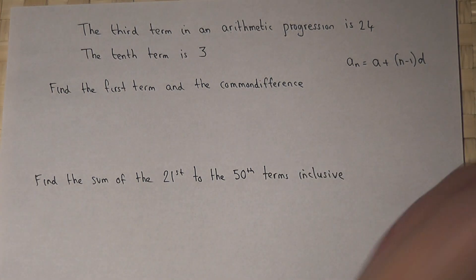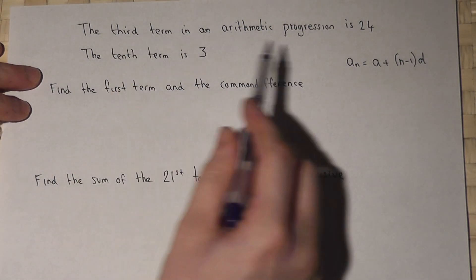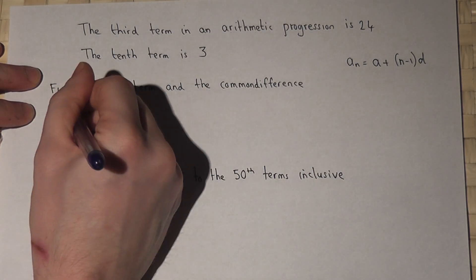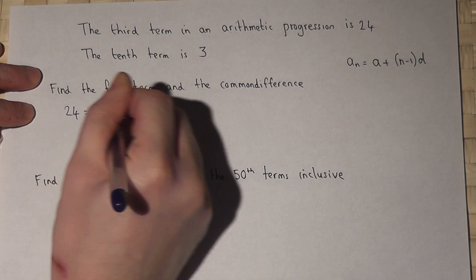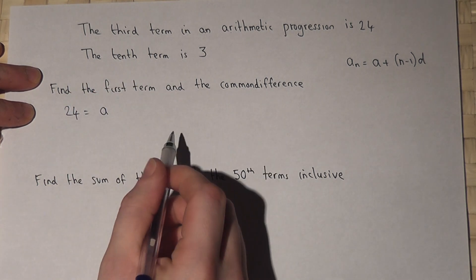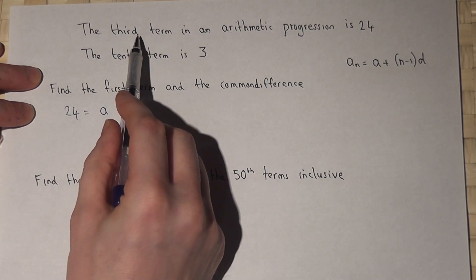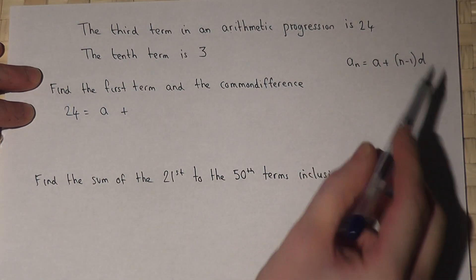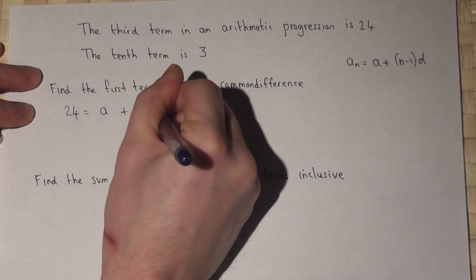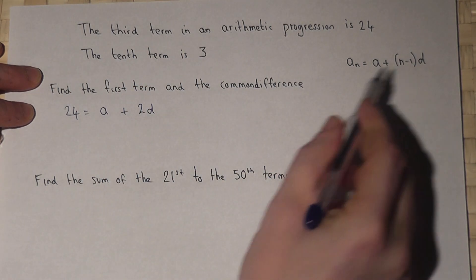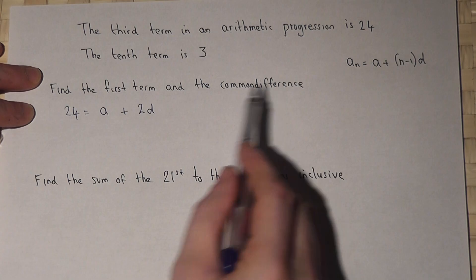So in this case the third term is 24. So 24 equals a, which we want to find, that's the first term, plus n is 3, it's the third term, 3 minus 1 is 2, so a plus 2d, where d is the common difference which we want to find as well.